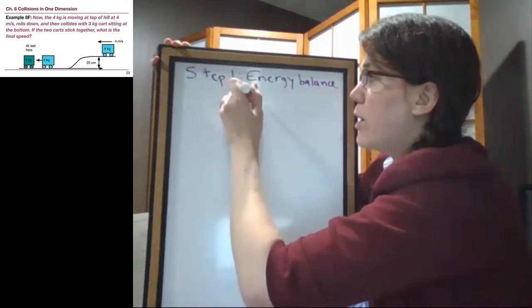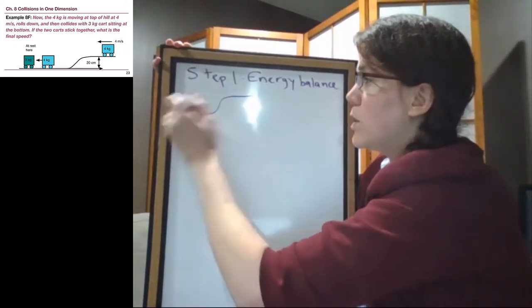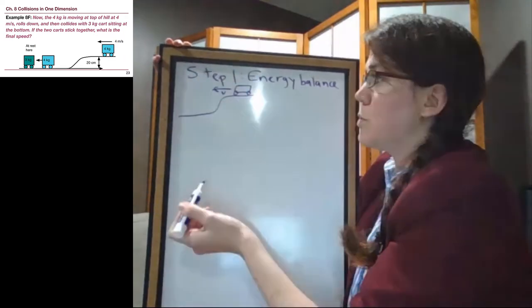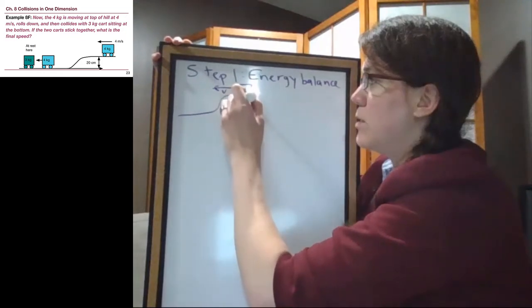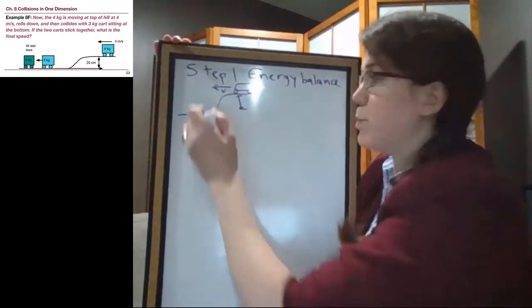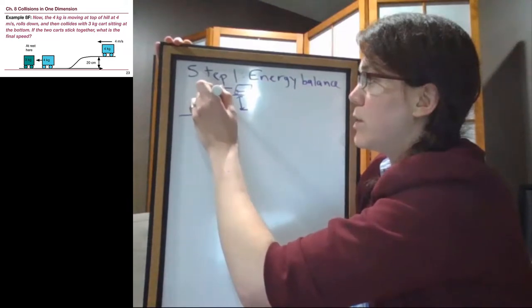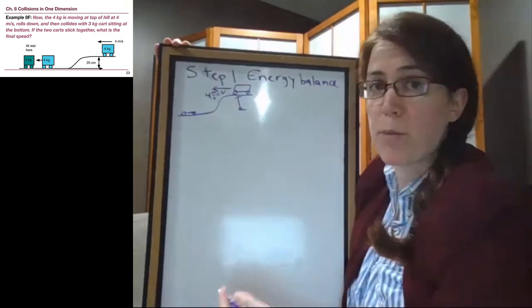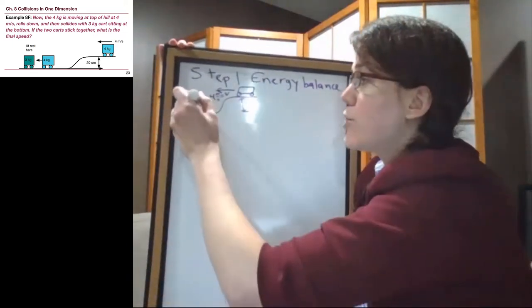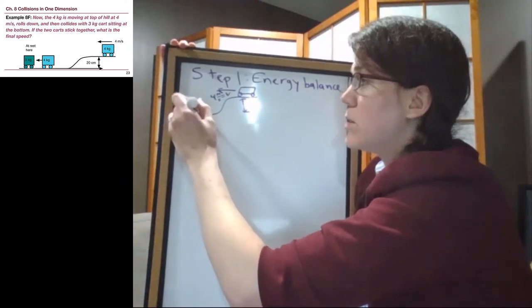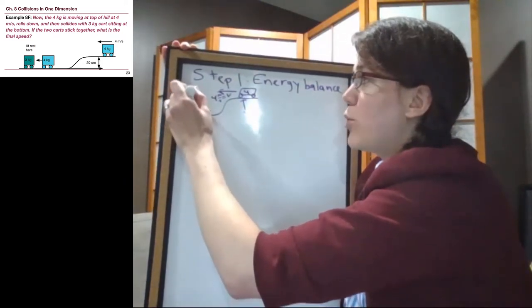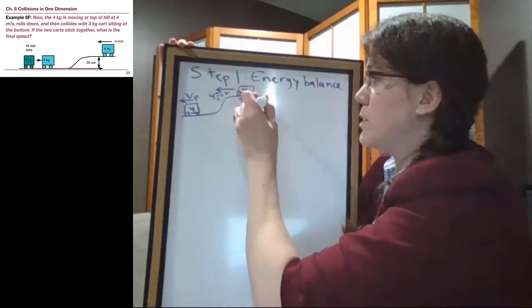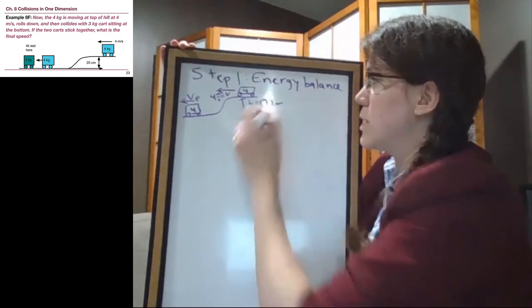And to be really clear, the situation is one where we have a cart moving at the top of the hill with an initial speed, and it's high up on the hill, where that initial speed is 4 meters per second. And then just that one cart rolls downhill, still just the 4-kilogram cart, and is now moving with some final speed. The height here is 20 centimeters, so 0.2 meters, just like before.